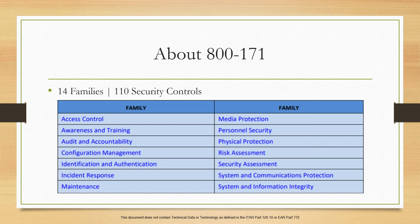System and communications protection covers whether information is regularly monitored and controlled at key internal and external transmission points. This is a big family within NIST 800-171 and accounts for 16 controls.